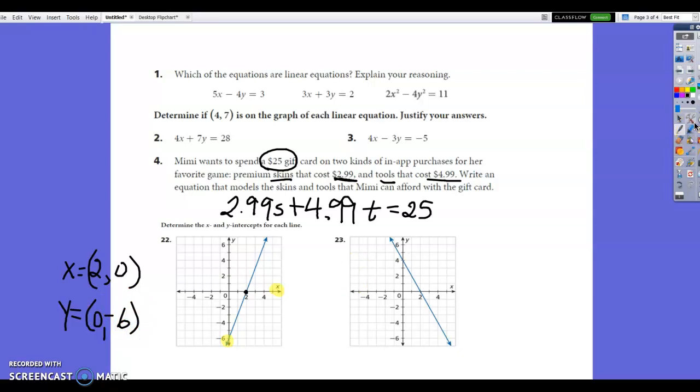For number 23, same thing. We're looking for our X and Y intercept. So here's our Y intercept. Here's our X intercept. Again, X is horizontal, Y is vertical. And we're simply going to write that our X intercept is at 2, 0, same thing as the other one. And our Y intercept is at positive 4. So 0 is our X, 4 is our Y. And we know that those points are solutions because they are points on that line.